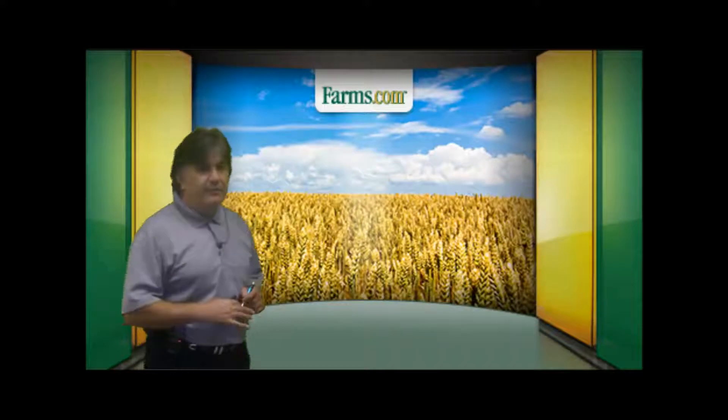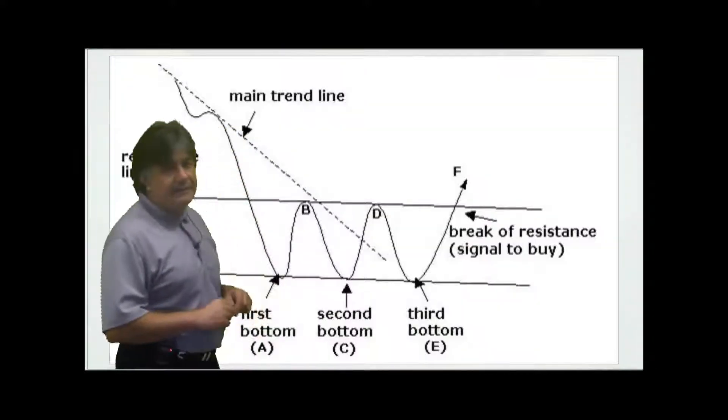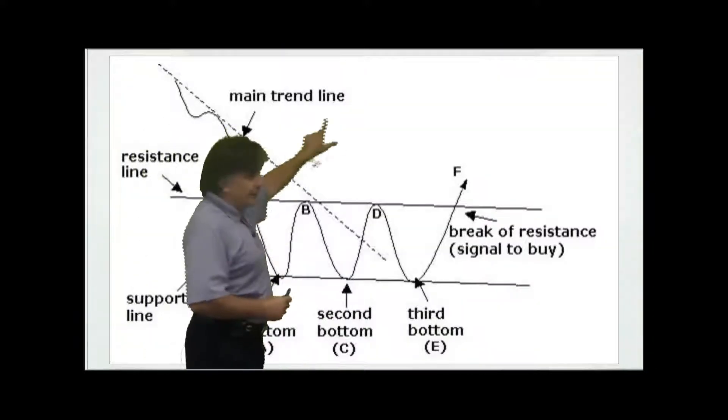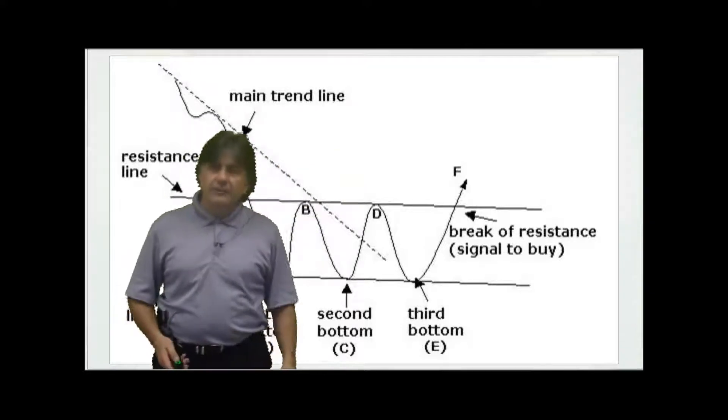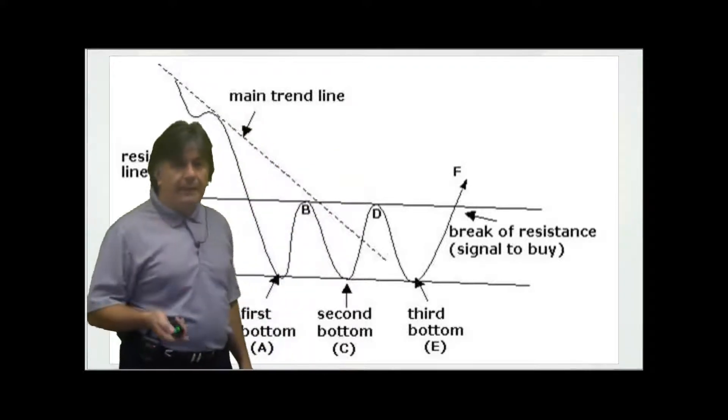So here's an example, the 2011 July CME lean hog daily futures chart. You can see right in the middle there, that little good double bottom there, and the market's trended back up.